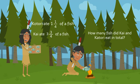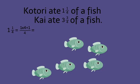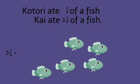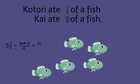How many fish did Kai and Katori eat in total? 1 and 1 fourth equals 1 times 4 plus 1 over 4, which equals 5 fourths. 3 and 3 fourths equals 3 times 4 plus 3 over 4, which equals 15 fourths, because 3 times 4 plus 3 equals 15.